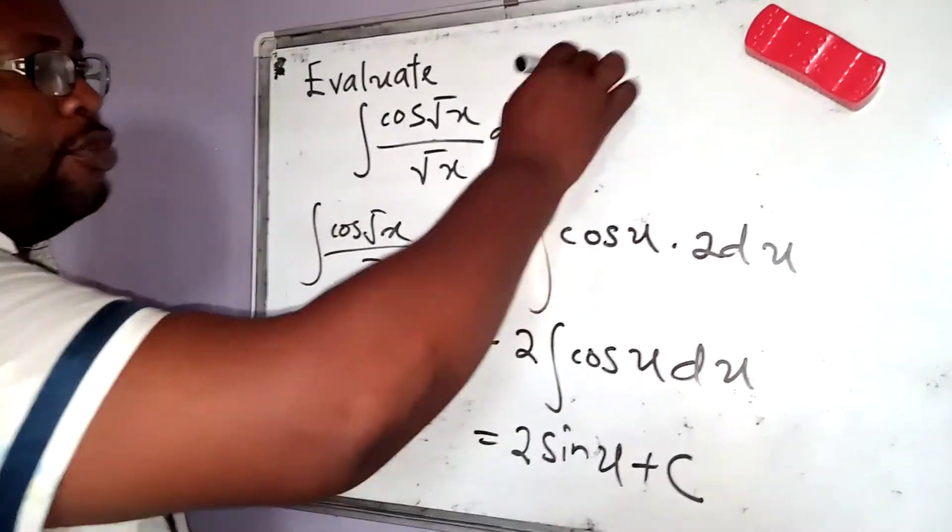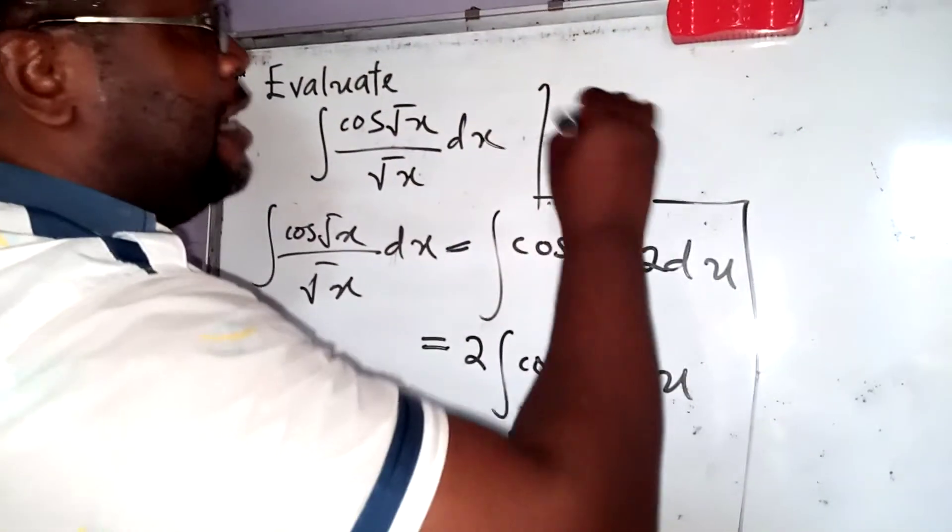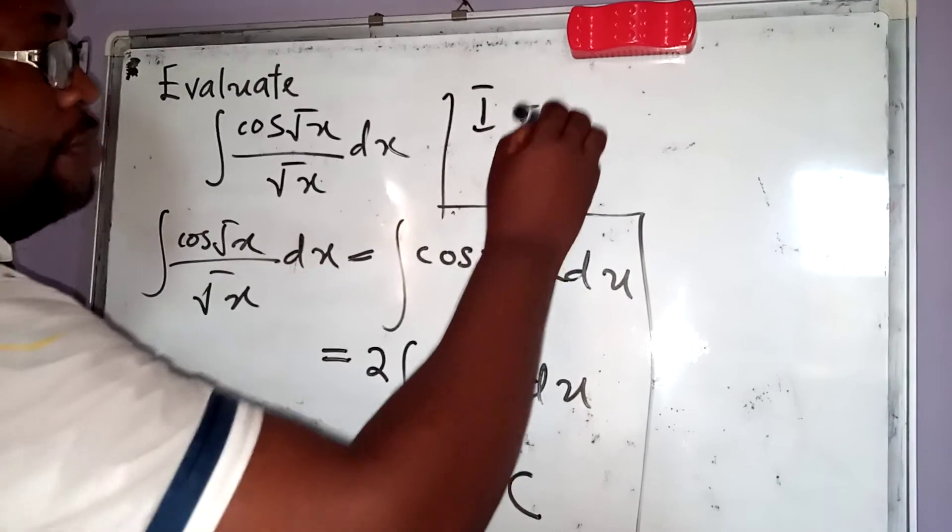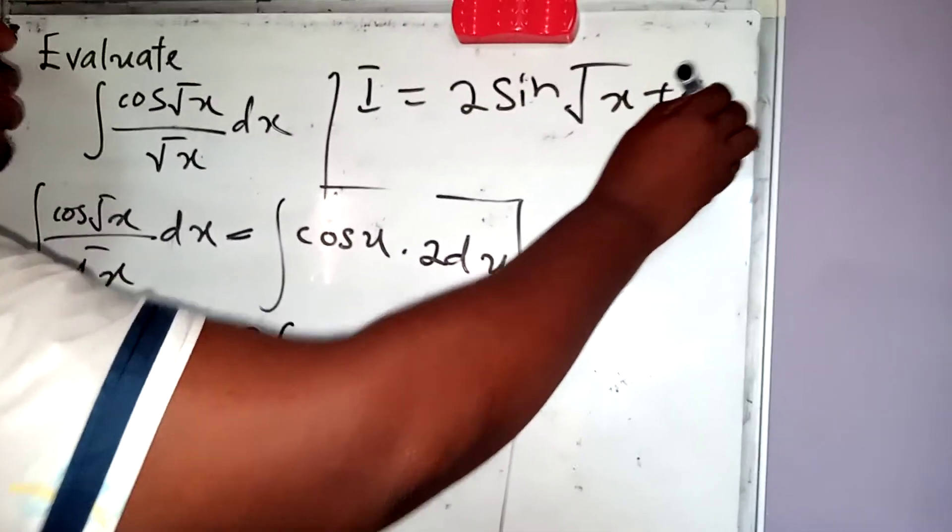Now, take note that u was taken to be something. u was taken to be root x. So my final answer, that integral now simply becomes 2 sine of the square root of x plus C.